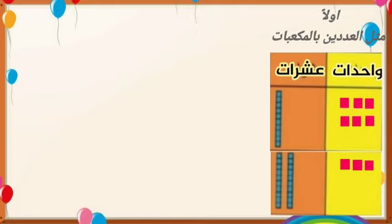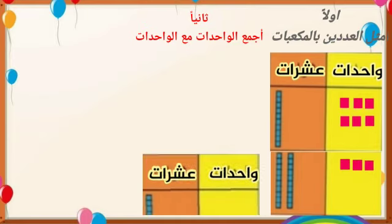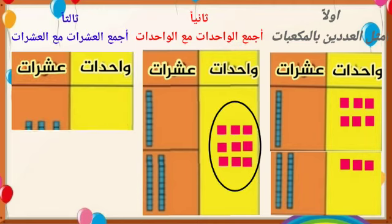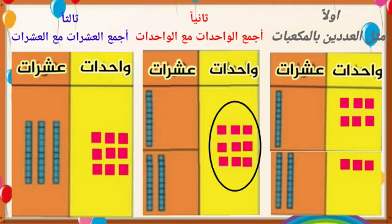أحسنتم. كيف سنجمع؟ نجمع الآحاد مع الآحاد: ست مكعبات وثلاث مكعبات يصبح العدد تسعة. ثم نجمع العشرات مع العشرات: عشرة واحدة وعشرتان.